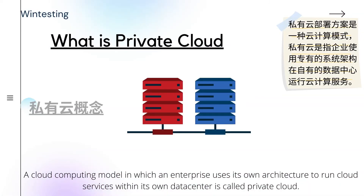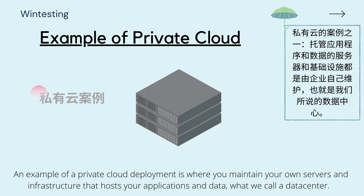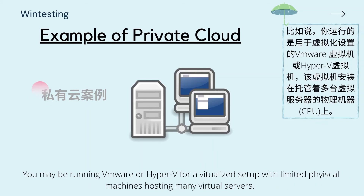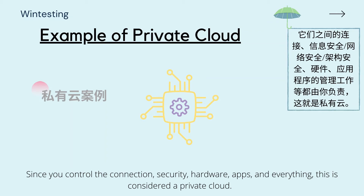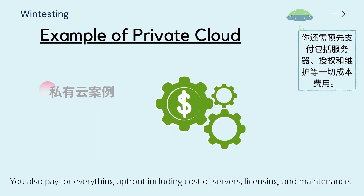What is private cloud? A cloud computing model in which an enterprise uses its own architecture to run cloud services within its own data center is called private cloud. An example is where you maintain your own servers and infrastructure that host your applications and data — what we call a data center. You may be running VMware or Hyper-V for a virtualized setup, with limited physical machines hosting many virtual servers. Since you control the connection, security, hardware, apps, and everything, this is considered a private cloud. You also pay for everything upfront, including the cost of servers, licensing, and maintenance.